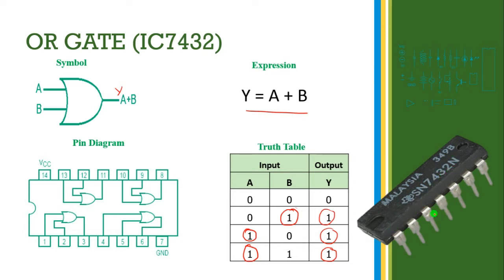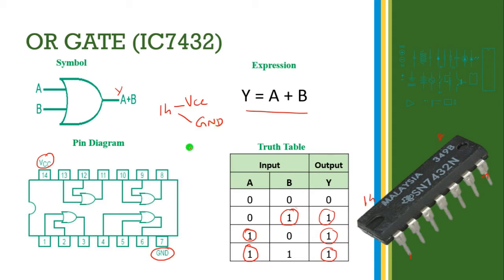This is the IC 7432. It is also a 14-pin IC. Pins 1 through 7 are on one side, and pins 8 through 14 are on the opposite side in reverse order. In this pin diagram, pin 14 is VCC and pin 7 is the ground pin. The remaining 12 pins use 3 terminals per OR gate, so 12 divided by 3 gives 4 OR gates inside the IC7432.